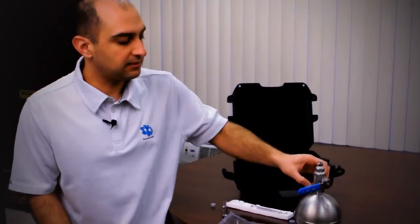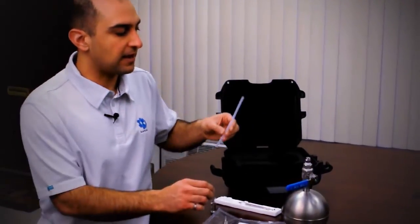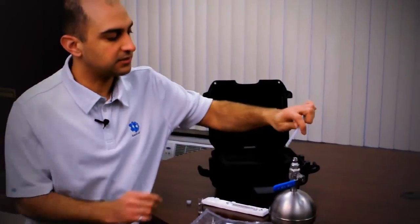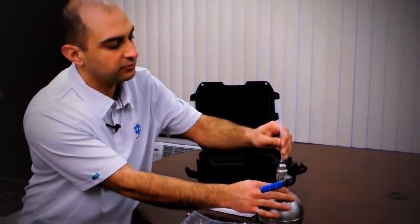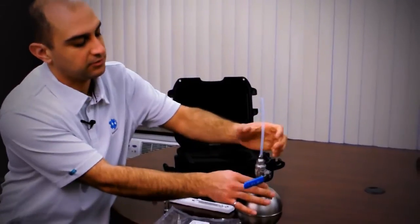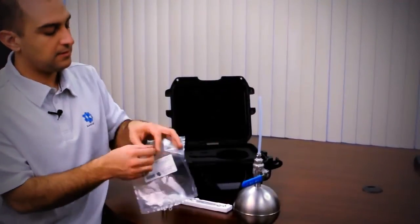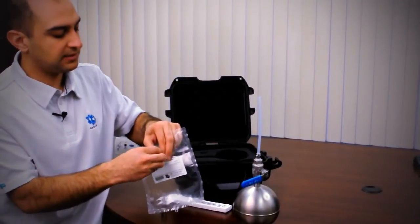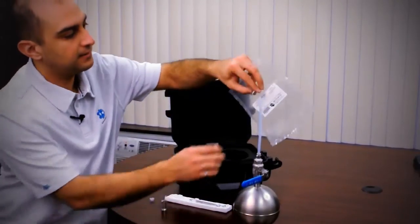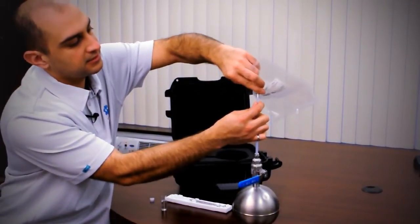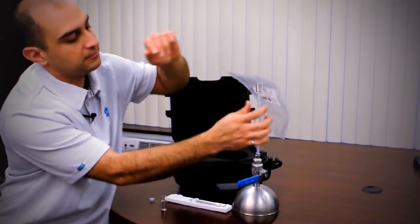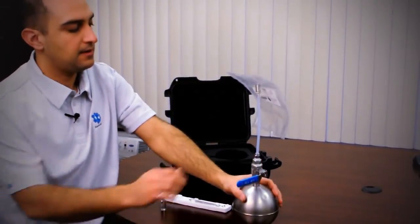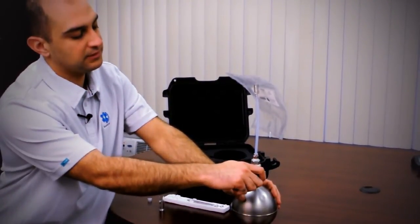Once that's completed, we are ready to fill the Tedlar bag. We insert the Teflon tube into the canister and make sure it clicks. We then open the Tedlar bag, insert it into the Teflon line, and slowly open the valve.